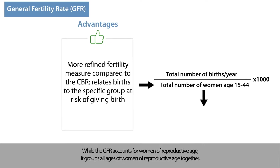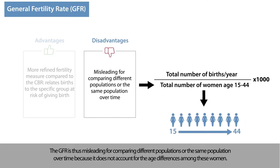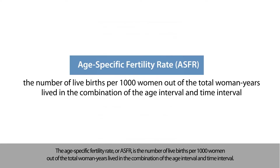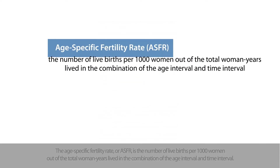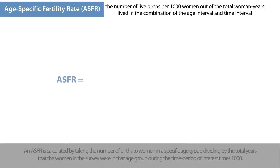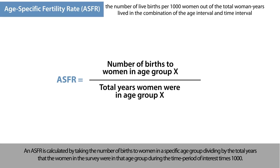While the GFR accounts for women of reproductive age, it groups all ages of women of reproductive age together. The GFR is thus misleading for comparing different populations or the same population over time because it does not account for age differences among these women. The age-specific fertility rate, or ASFR, is the number of live births per 1,000 women out of the total woman-years lived in the combination of the age interval and time interval. An ASFR is calculated by taking the number of births to women in a specific age group, dividing by the total years that the women in the survey were in that age group during the time period of interest, times 1,000.